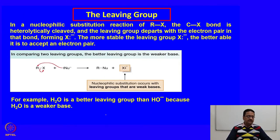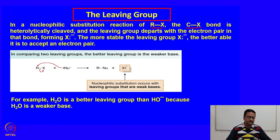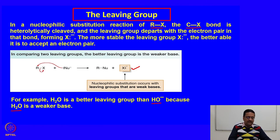Now let us talk about the leaving group. In a nucleophilic substitution reaction with R-X, the carbon-halogen bond is heterolytically cleaved: the electron pair of the bond is left with the leaving group, making it a negatively charged ion (X⁻). The more stable the leaving group X⁻, the better it is able to accept the electron pair. The better leaving group is a weaker base — for example, water is a better leaving group than OH⁻ because water is a weaker base.